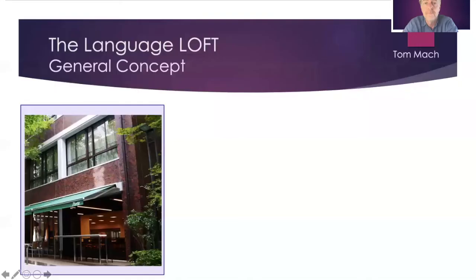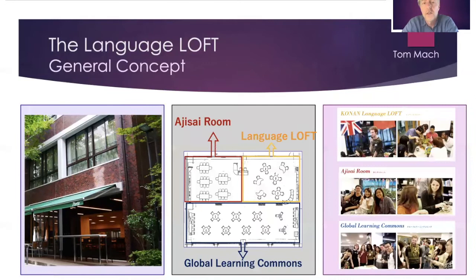If you joined us on campus, this is a facility you would see. This is our global zone, the terrace view. If you walked inside, you would notice that it's divided into three major zones. The language loft is our self-access center for English. The Ajisai room is where our international students hang out — they study there and can use the room in any way they want. And then the global learning commons is a sort of free space where any students on campus can mingle. From this layout, you can see that a major concept of this place is about interaction, social interaction, and especially intercultural communication.